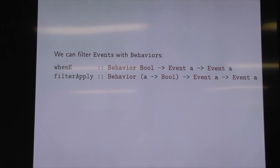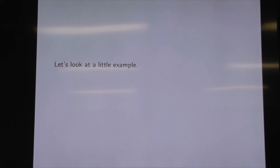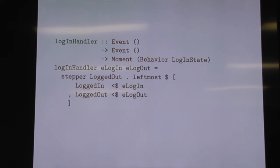We can filter events using behaviours. If we have a Behaviour Bool, we can use that as a time-varying gate for things — where the dark colour is true, we just filter out our events based on our time-varying boolean. That can be quite handy. Here's an example: login and logout events giving us a logged-in or logged-out state. If we log in, we change to the logged-in state; if we log out, we change to the logged-out state; we start as logged out. Any time we grab that, possibly at other points in time, we can find out whether we're logged in or logged out.